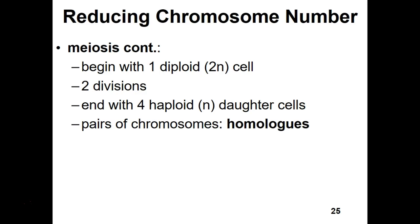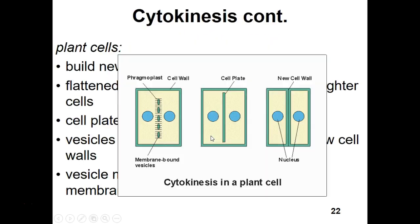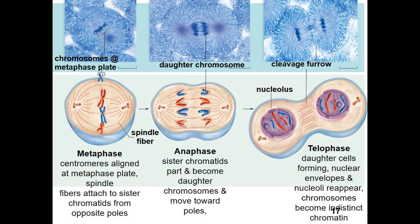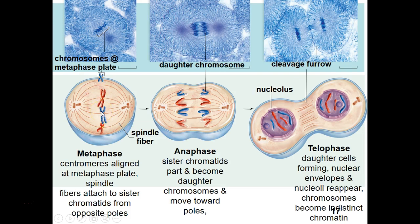We end up with four haploid daughter cells that are not identical. Pairs of chromosomes are called homologues — one came from mom, one from dad, but they carry the same type of information. For example, one big chromosome from mom and one big chromosome from dad are homologues — same information, just from different parents.